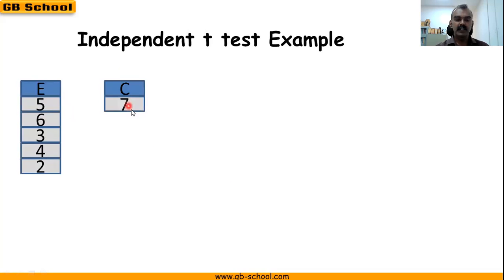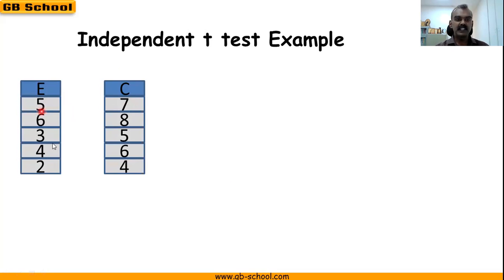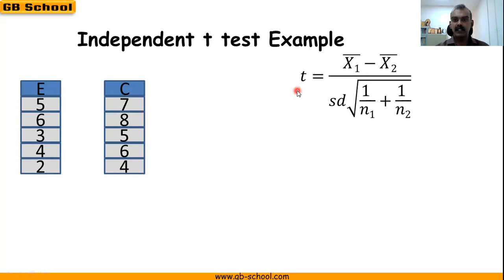Similarly, we have the control group with data: 7, 8, 5, 6, and 4. Now we want to find out if there is any difference between these two groups. As usual, first write the formula: t = (x̄₁ − x̄₂) / (SD × √(1/n₁ + 1/n₂)).